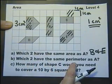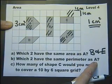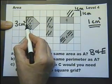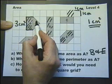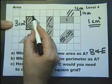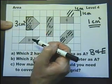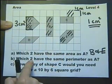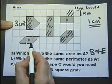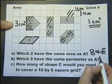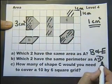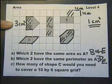Which two shapes have the same perimeter as A? A perimeter is the distance around the outside. Around the outside of A is 1, 2, 3, 4 centimetres plus two diagonals. Those diagonals are more than a centimetre, but I don't need to know the exact length — I can just say 2 diagonals. So I'm looking for two shapes that have 4 centimetres and two diagonals. Shape D has 1, 2, 3, 4 centimetres and two diagonals, so D is one of them. E also has 4 centimetres and two diagonals. So D and E have the same perimeter as A.